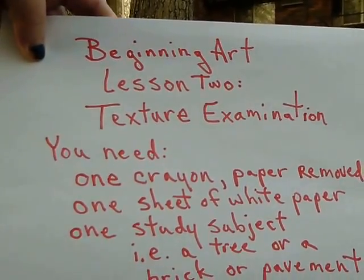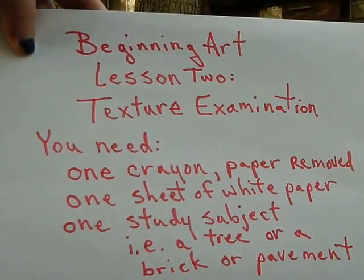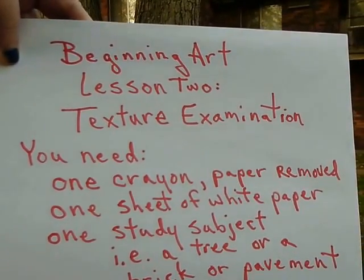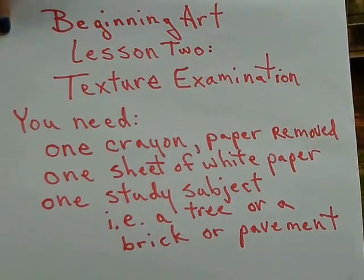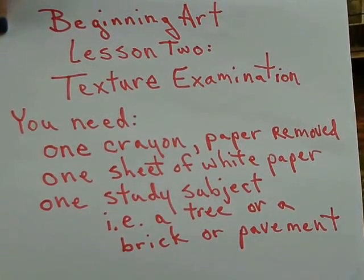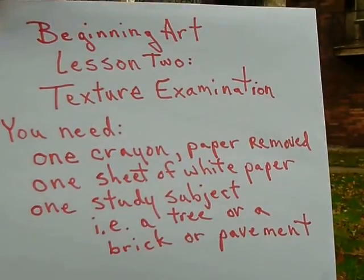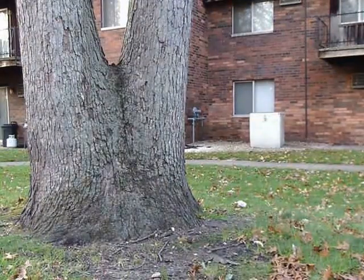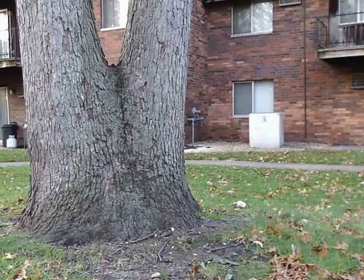Beginning art lesson two: texture examination. You need one crayon with paper removed, one sheet of white paper, and one study subject — such as a tree, a brick, or pavement — anything with texture that you can replicate. This is going to take me a minute to prepare, so I'm going to make sure I see the same thing the camera's seeing.